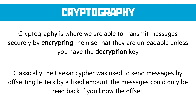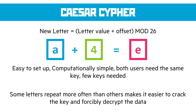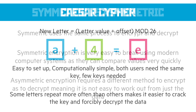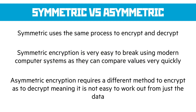Classically, the Caesar cipher has been used to send messages by offsetting letters by a fixed amount. The way we calculate Caesar ciphers is straightforward: we take our original letter, add an offset — so A is 1, B is 2, C is 3 — and work out what the new letter is. When you get to the end of the alphabet, you use the modulus function to loop back to the start. It's easy to set up and very computationally simple. This brings us to the argument of symmetric versus asymmetric keys. The Caesar cipher is a symmetric encryption process because it uses the same process to encrypt and decrypt — just backwards.